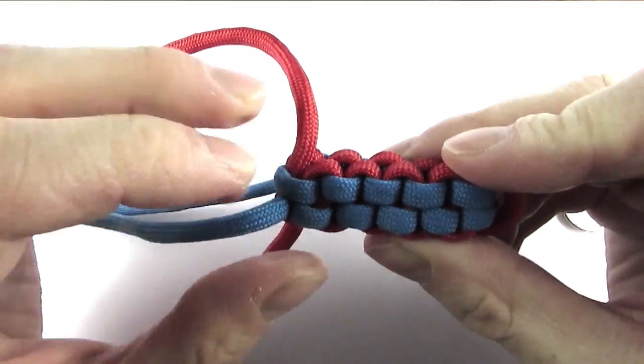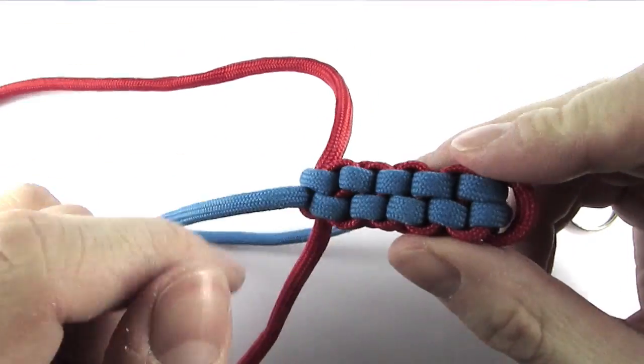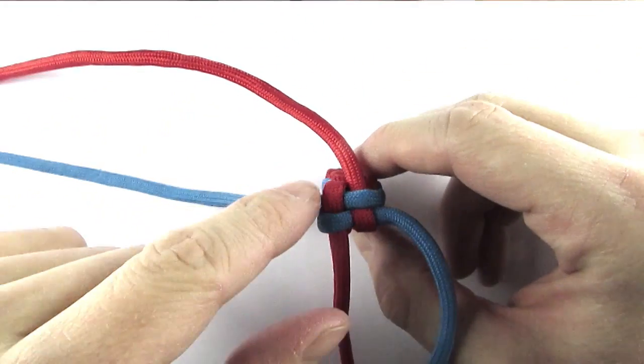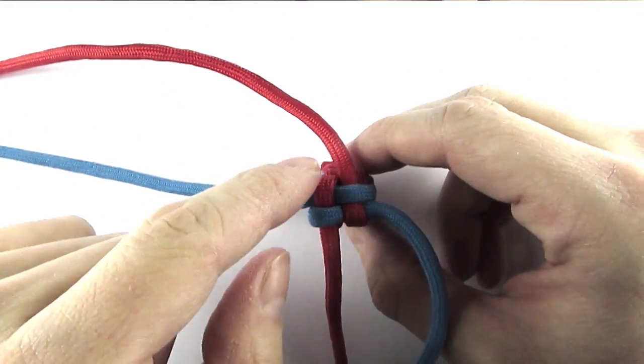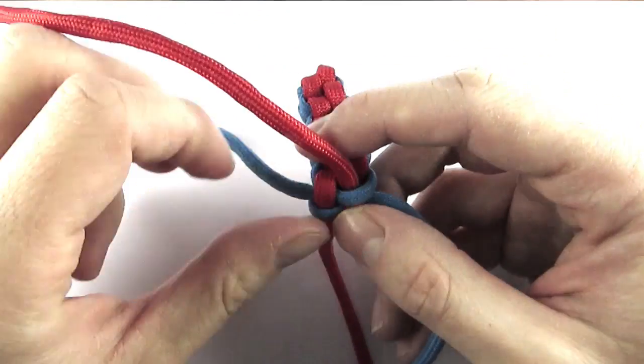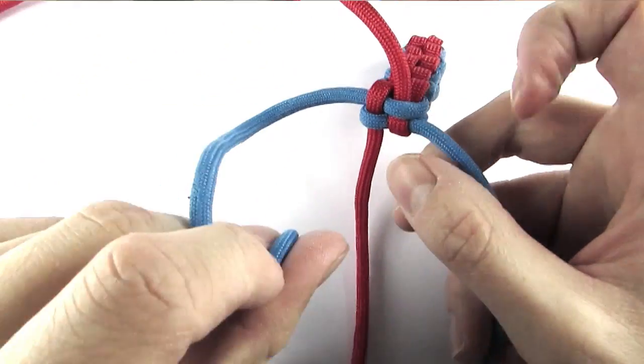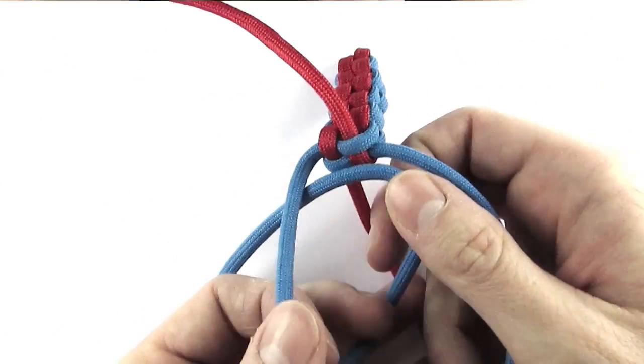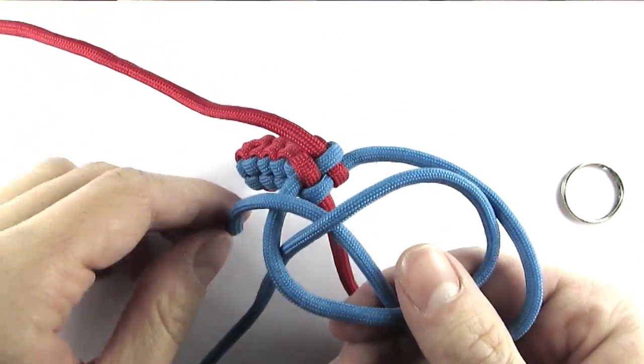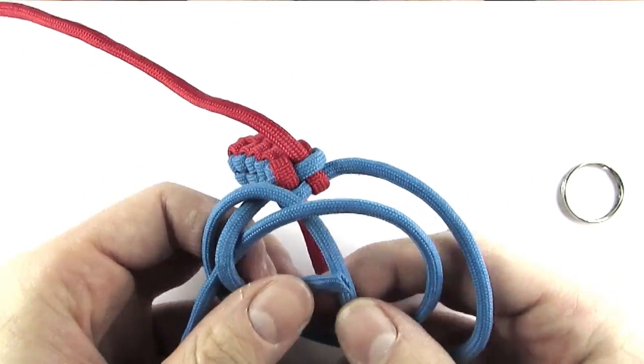Okay I'm back and I've made the sufficient length of the keychain that I want. And at this point you can simply cut off the ends and melt them and that will give you the finished keychain. But what I'm going to do is I'm going to finish it using a lanyard knot, which I prefer because it makes it a lot more durable.